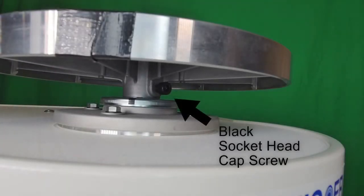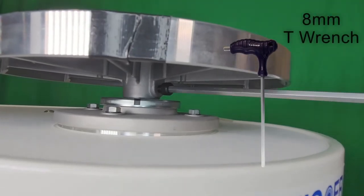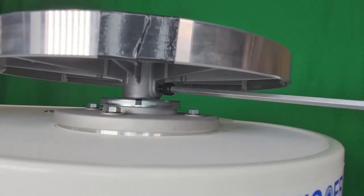First, locate the black socket head cap screw that locks the wheel head in place. Using the 8mm T-Wrench that is provided with your wheel, loosen the set screw,